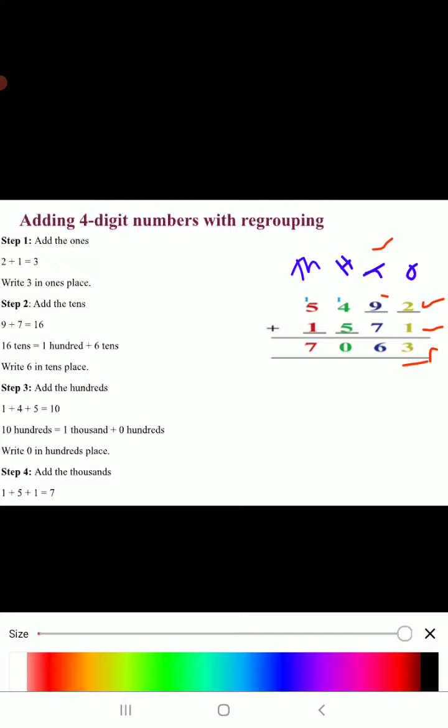9 plus 7 equal to 16. So there are 16 10's.